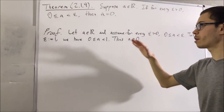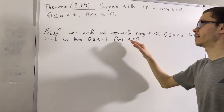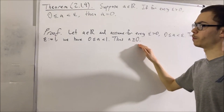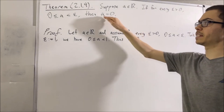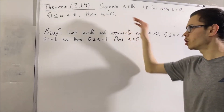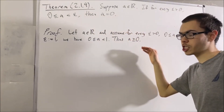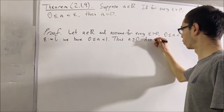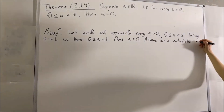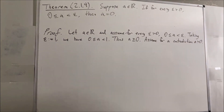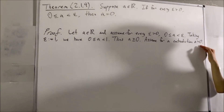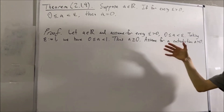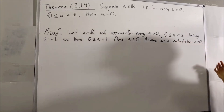So we now know for a fact that A is greater than or equal to 0. But we want to prove that A is equal to 0. So assume for a contradiction that A is greater than 0. Since A is greater than 0, it follows that 0 is less than one-half A is less than A.